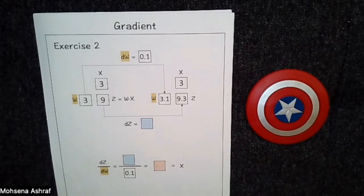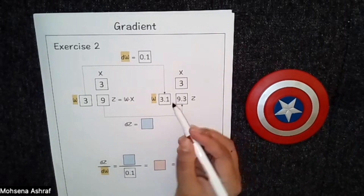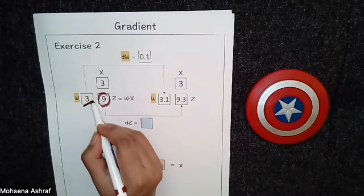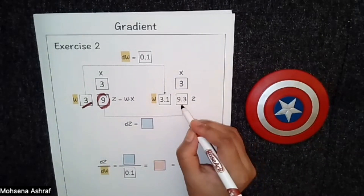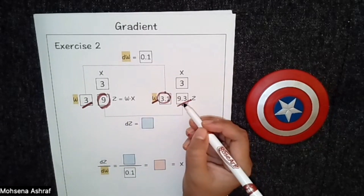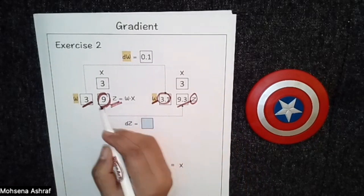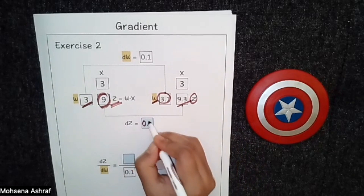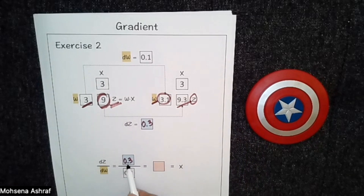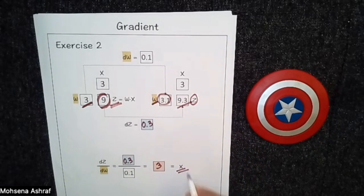Now the next exercise is similar to the previous one. Let's calculate the value of dz here. So z was 9 when w was 3. Now z becomes 9.3 as w is updated to 3.1. So dz = 9.3 − 9 = 0.3. We put the value of dz, which is 0.3, and divide 0.3 by 0.1, we get 3. You can see that we are getting x here.